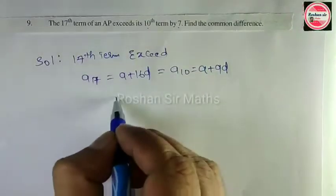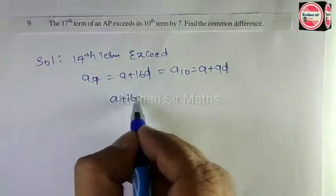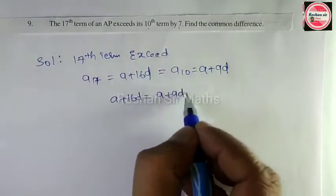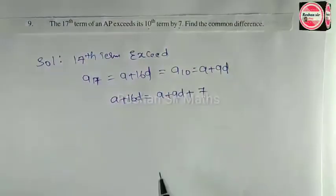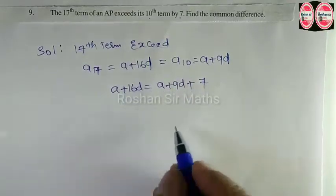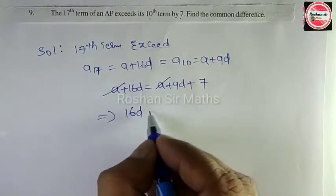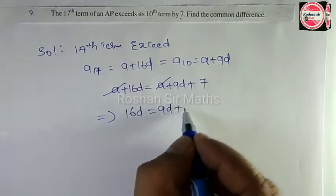Then what to do? A plus 16D is equal to A plus 9D. We're exceeding by 7. Take this term, equate both. Both A's will cancel here. 16D is equal to what remains? 9D plus 7.